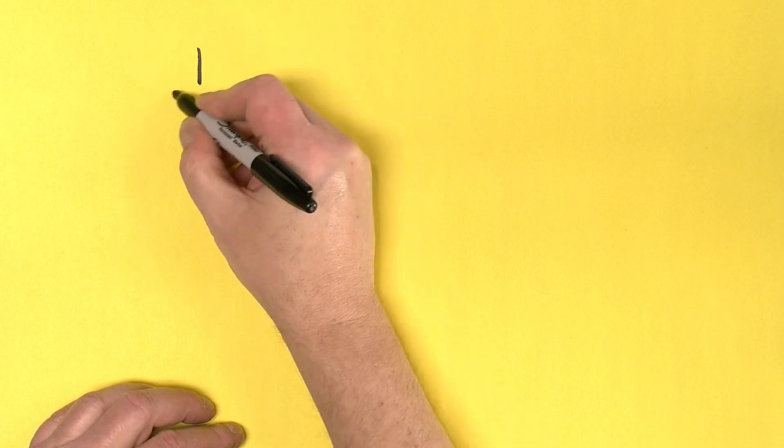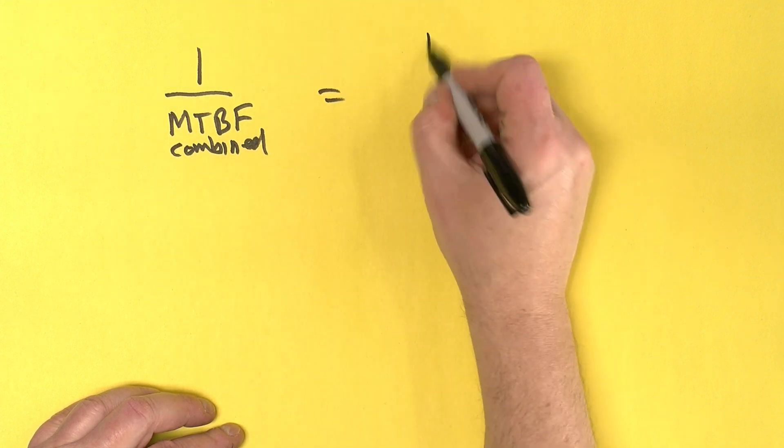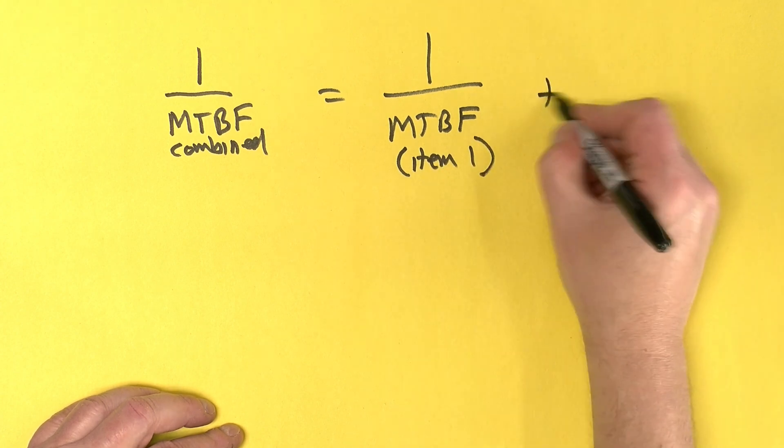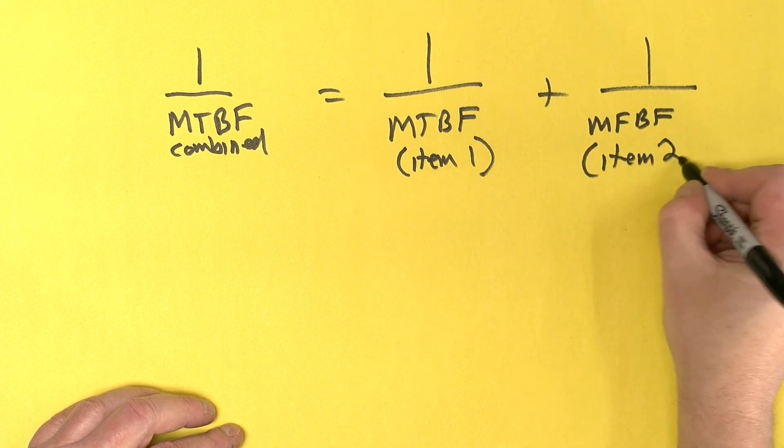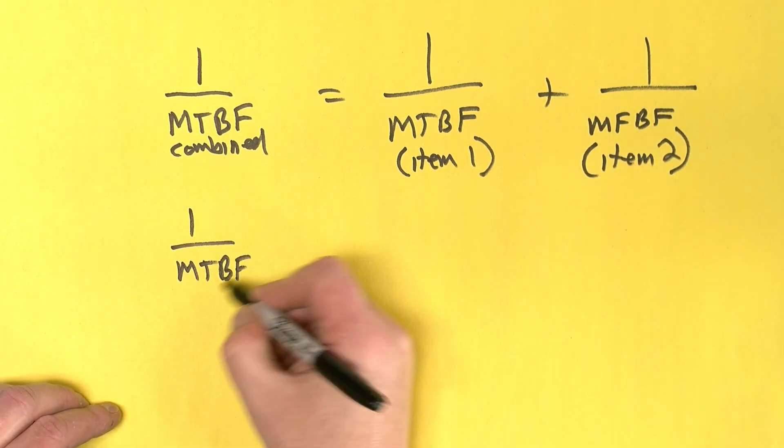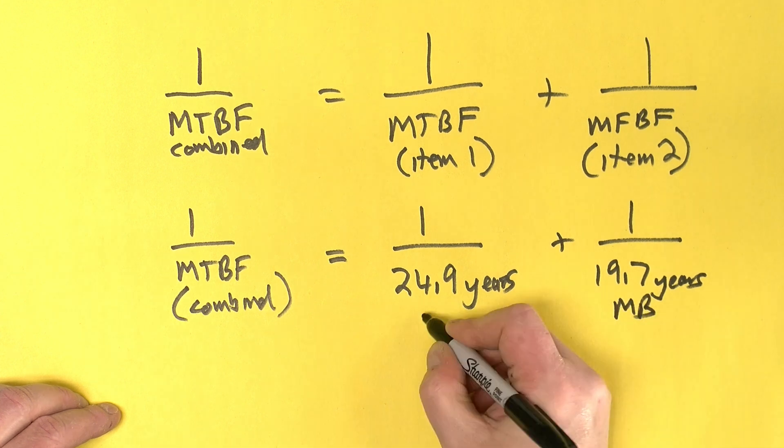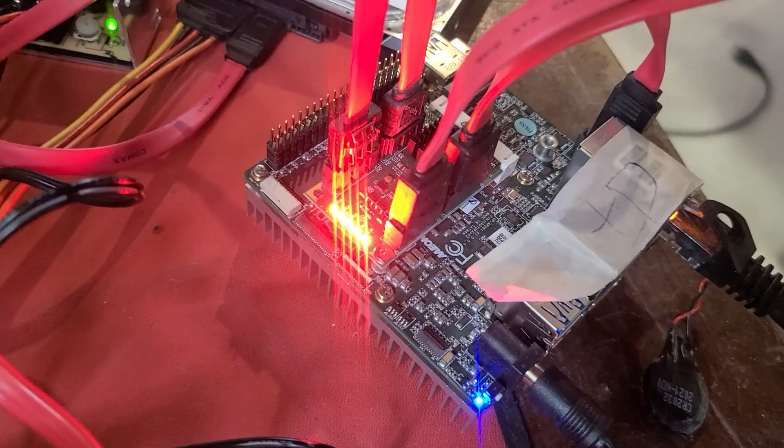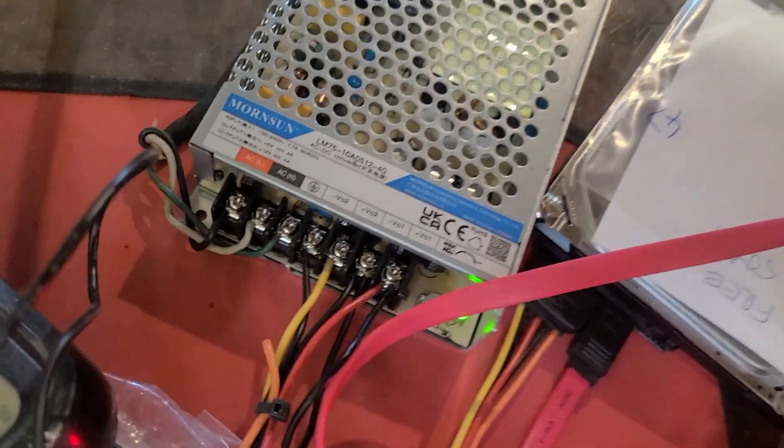And the formula is 1 over the mean time between failure of the combined item is equal to 1 over the mean time between failure of the first part and 1 over the mean time between failure of the second part. So for our example, well, here's the equation. The combined result is a mean time between failure of about 11 years. And this is a very real example because it's two things I'm going to be using for a project in a future video.